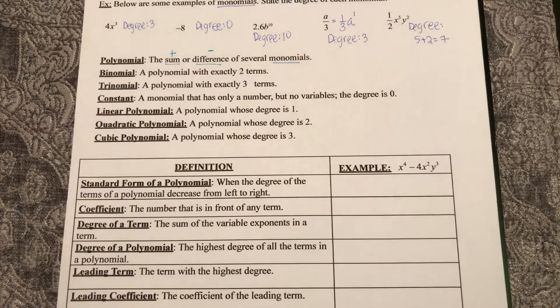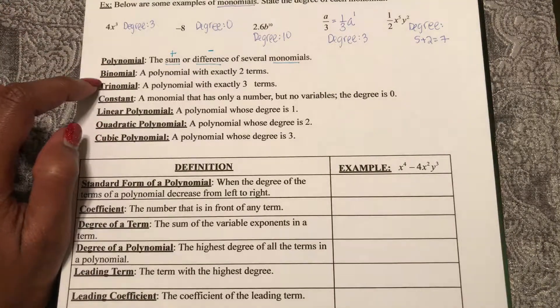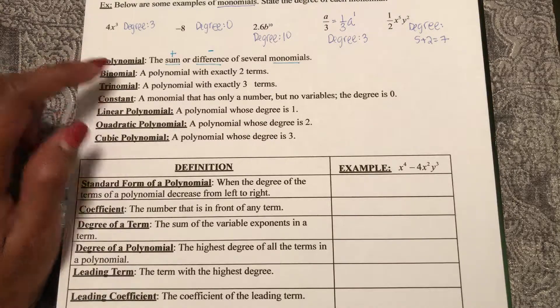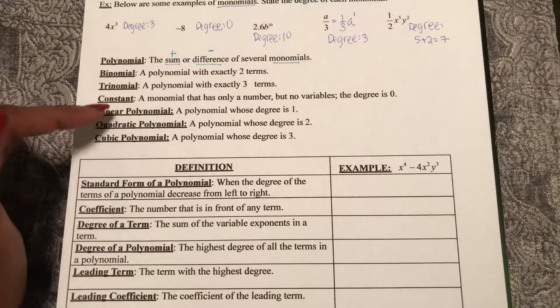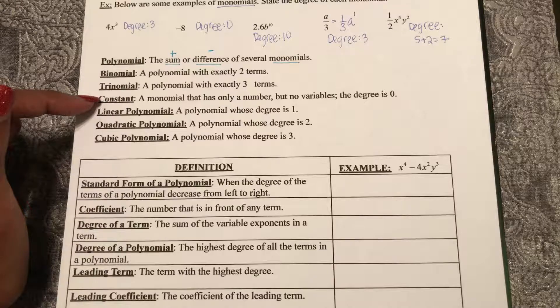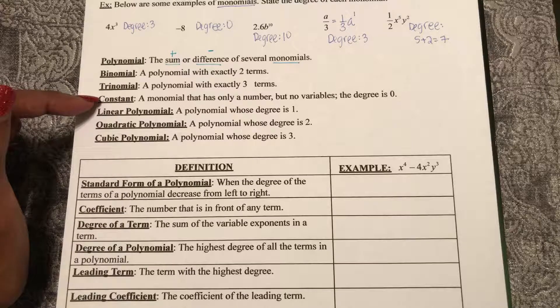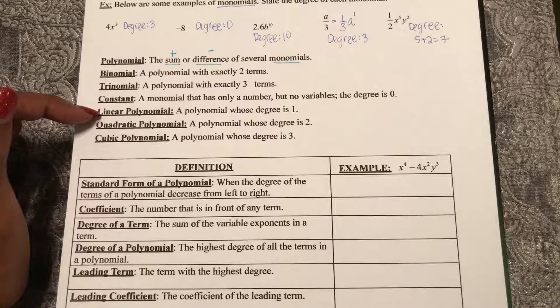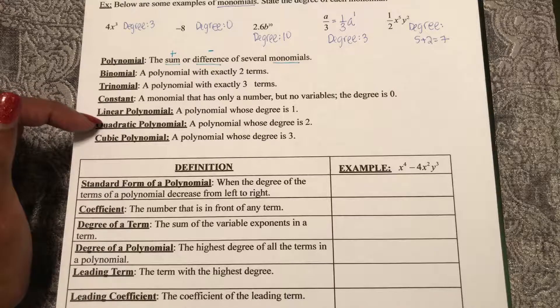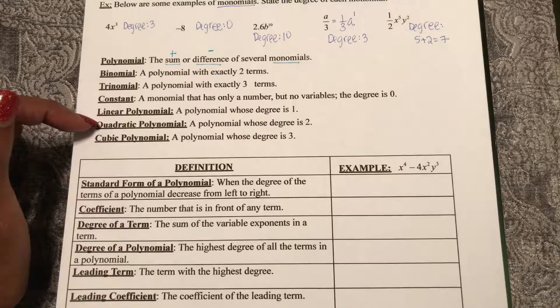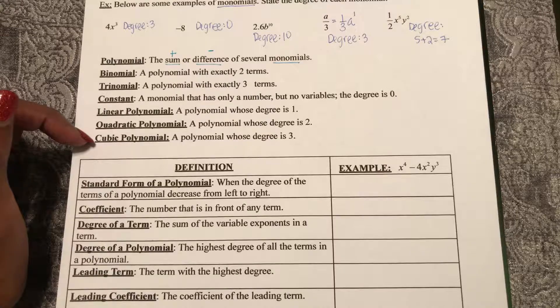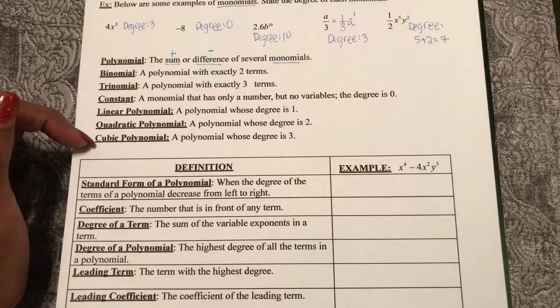A binomial is a polynomial with two terms. A trinomial is a polynomial with exactly three terms. A constant is a monomial that is only a number, but no variables. A linear polynomial is a polynomial whose degree is one. A quadratic polynomial is a polynomial whose degree is two. And a cubic polynomial is a polynomial whose degree is three.